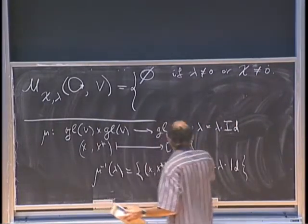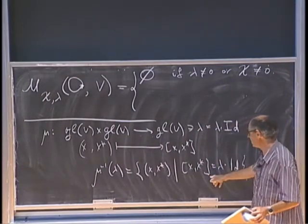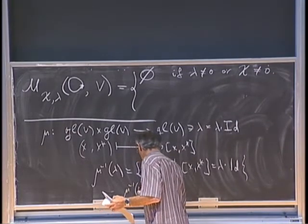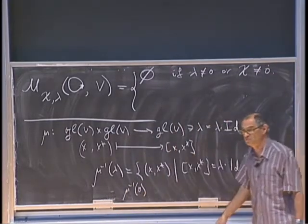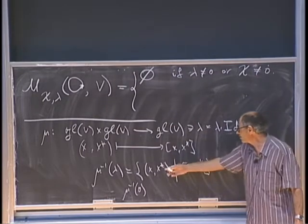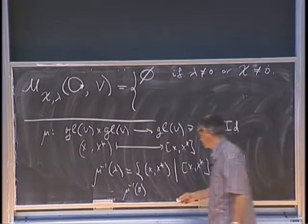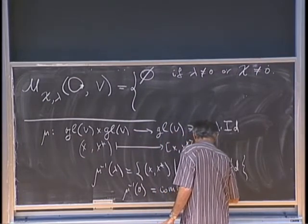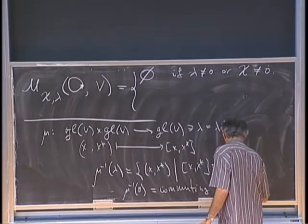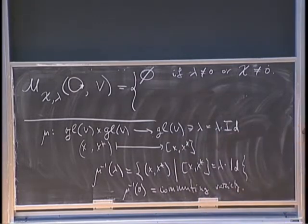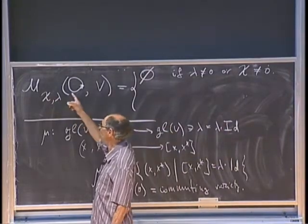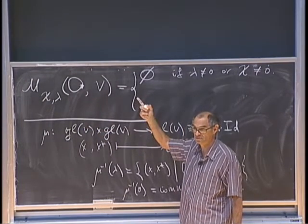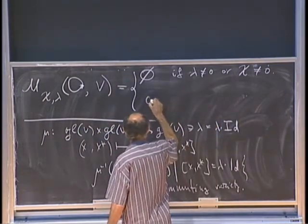This set is empty if either lambda is not zero or chi is not zero. When both are zero, mu-inverse of zero is simply the set of arbitrary pairs of commuting matrices — the commuting variety.